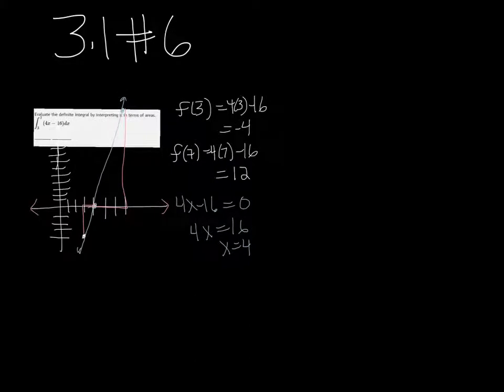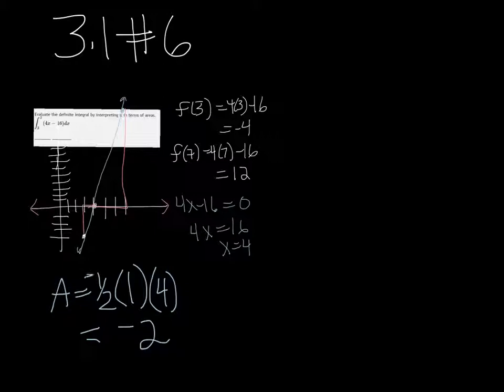Alright, so the area of the smaller triangle, the area is half of the base, the width of that one is 1, the base is 1. This is from 3 to 4. And the height, it goes from 0 to negative 4, so the height would be 4. So we'd get negative 2, because we know that that area, even though negative area doesn't really make sense. When we're doing integration, if it's below the x-axis, then it's negative.